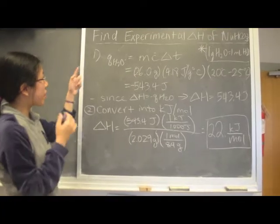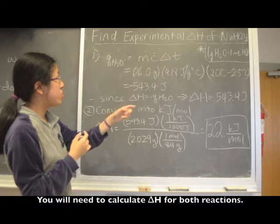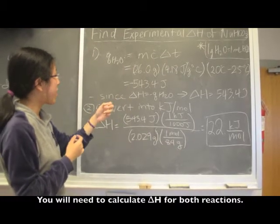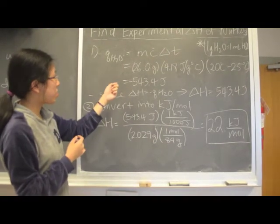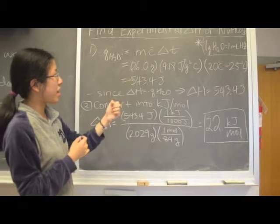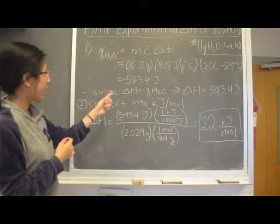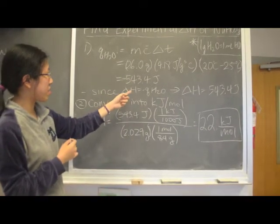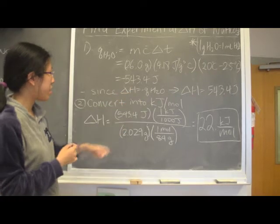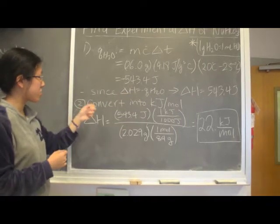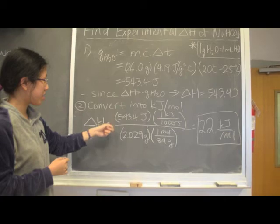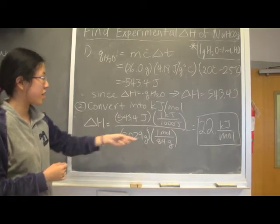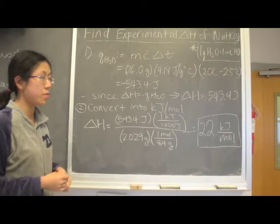Once you're done with the experiment, you have to find the experimental delta H for one of the substances you use and you plug in the mass of the water, the specific heat, and the change in temperature. Then you have to negate it since delta H is equal to negative Q H2O, and then you have to convert that value into kilojoules per mole. And once you plug in these values here as such, then you should get 22 kilojoules per mole.